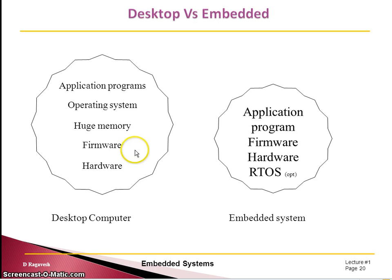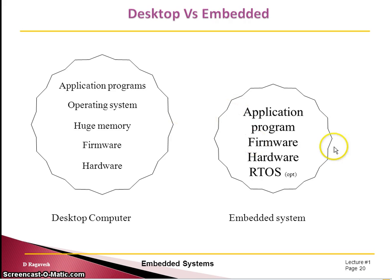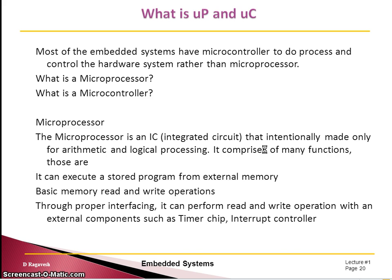This is a basic difference between the embedded system and the desktop system. The desktop has huge memory and higher speed, whereas some embedded systems even run at 1 megahertz speed. There is a speed difference, a memory difference, and also the task assigned to the system is different. When we look at the desktop and embedded system, the two primary integrated circuits are the microprocessor and the microcontroller.